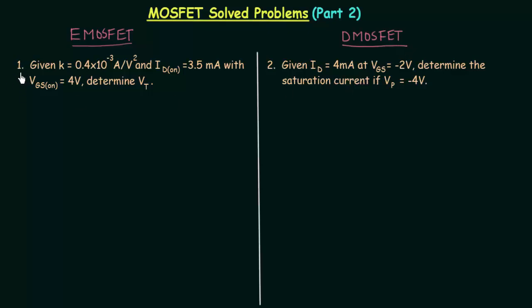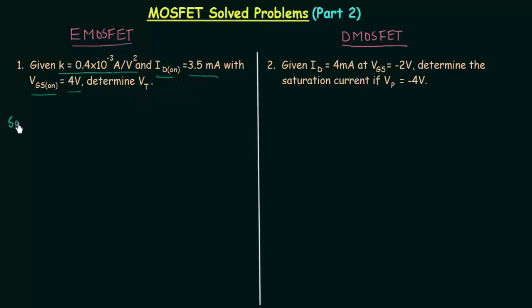Let's start with problem number one. Given K is equal to 0.4 × 10⁻³ ampere per volt square, and ID(on) is equal to 3.5 milliamp with VGS(on) equal to 4 volt. Determine the threshold voltage VT.